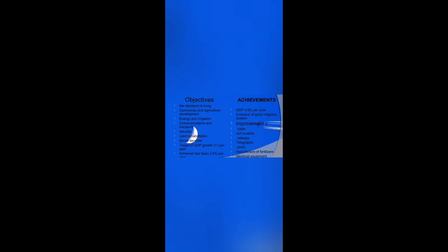Types of planning: Imperative Planning — the central planning authority decides upon every aspect of the economy; it is related to a socialist economy. Indicative Planning — the state sets both parameters and goals for the economy and indicates targets to achieve. Perspective Planning — planning for a long period of time, usually 15 to 20 years. Rolling Planning — suggested by Gunnar Myrdal; it is of three types: a plan for the current year, a plan for a fixed number of years (three, four, or five years), and a plan for 10–15 or 20 years.